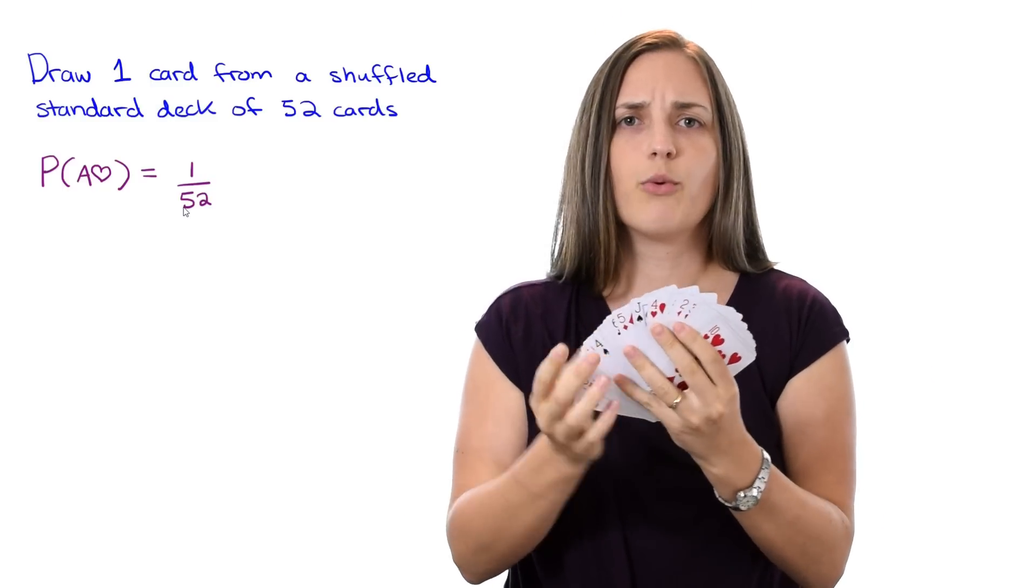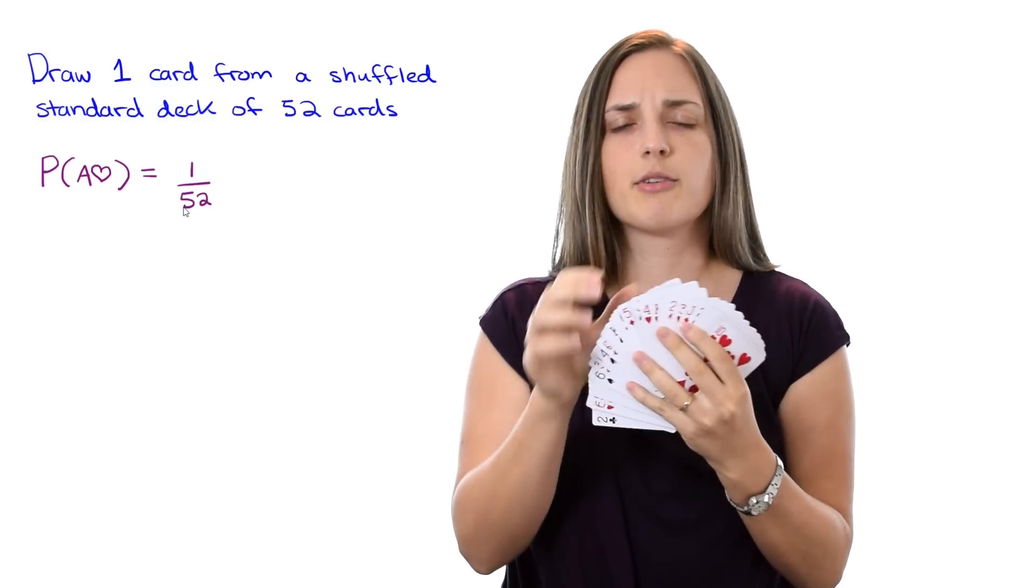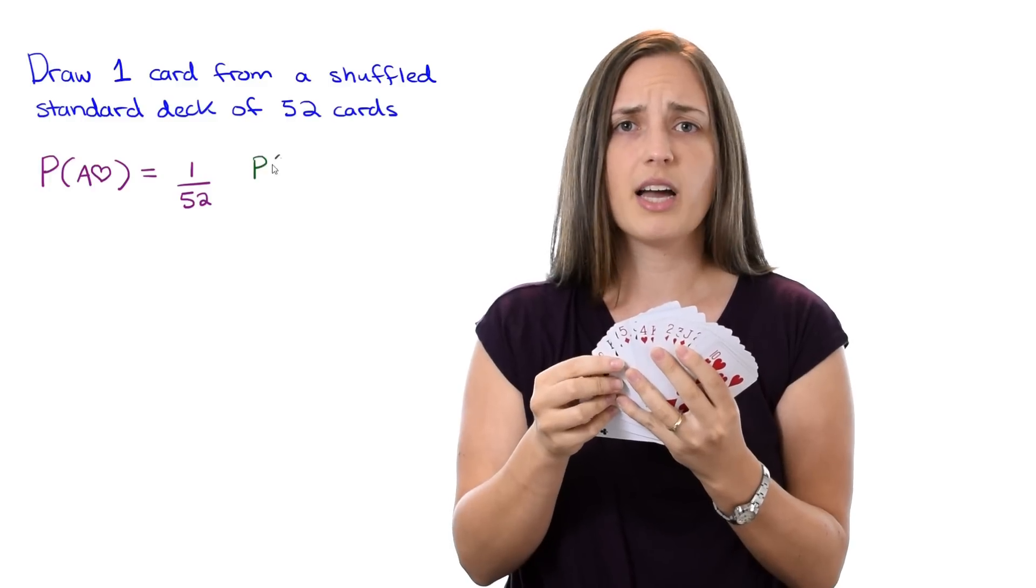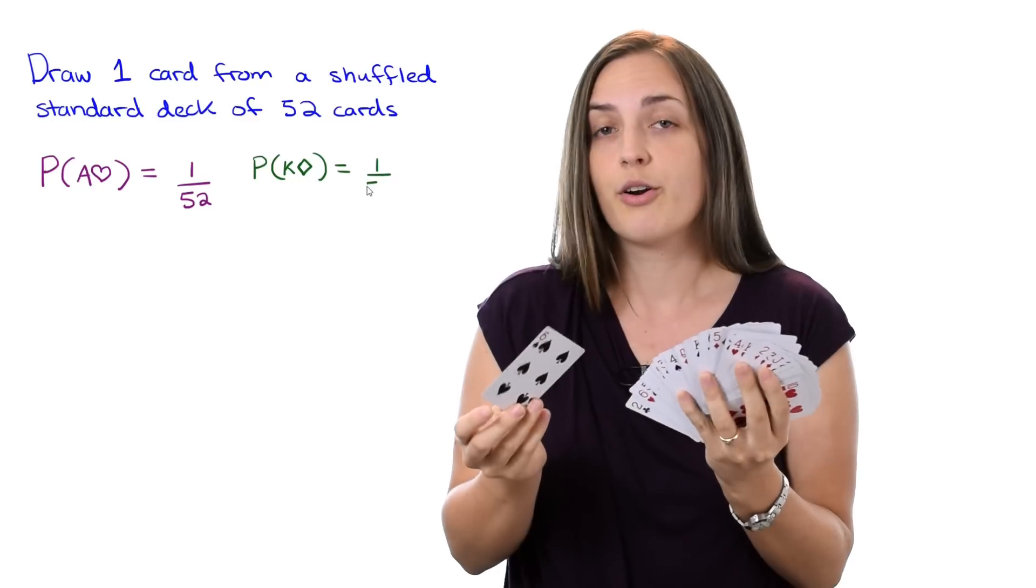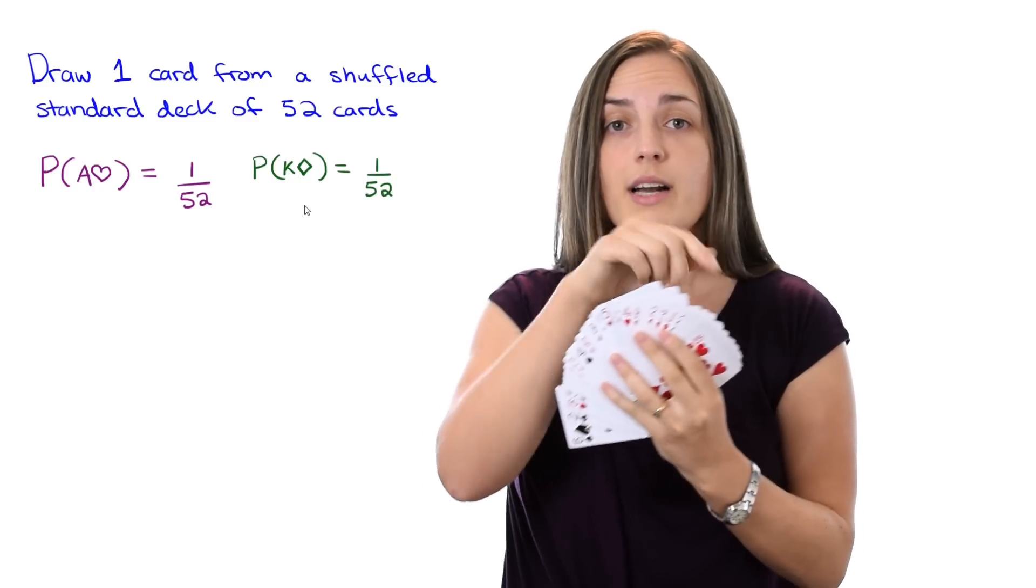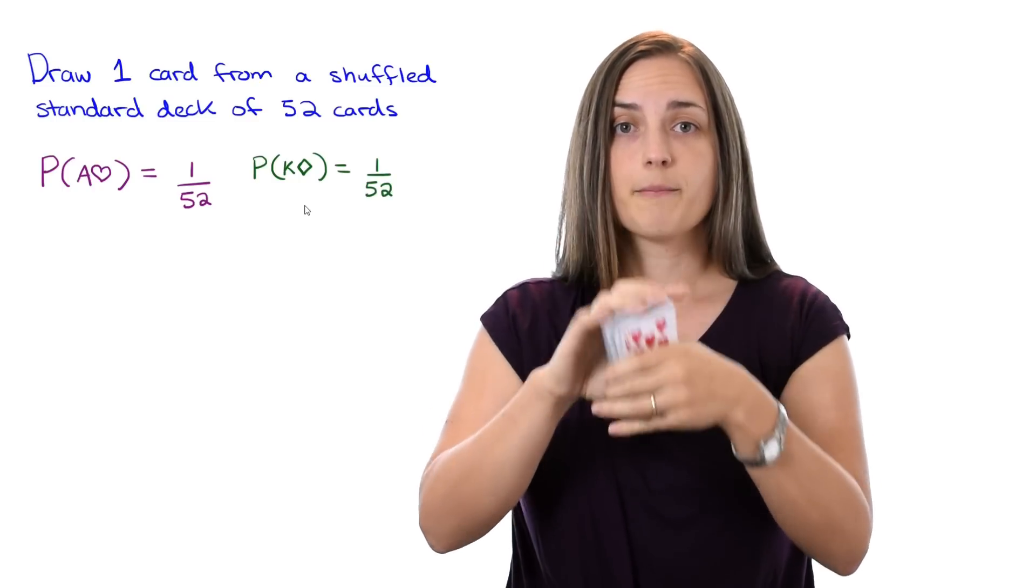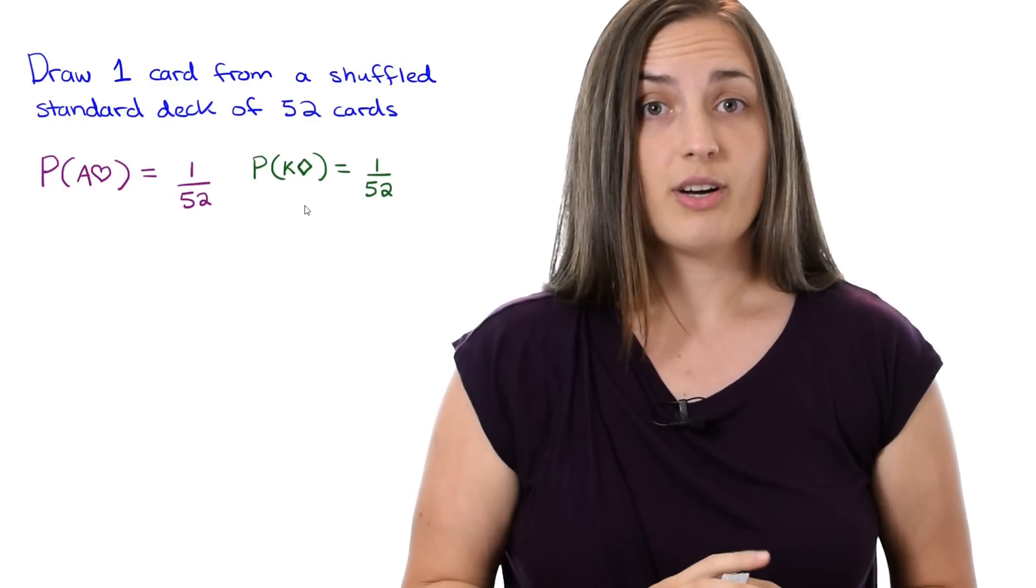If I repeat the experiment and I say what's the probability now I'm not curious about the probability of Ace of Hearts but for King of Diamonds. What's the probability? Well again it's 1 out of 52. There is only one King of Diamonds in this whole deck.